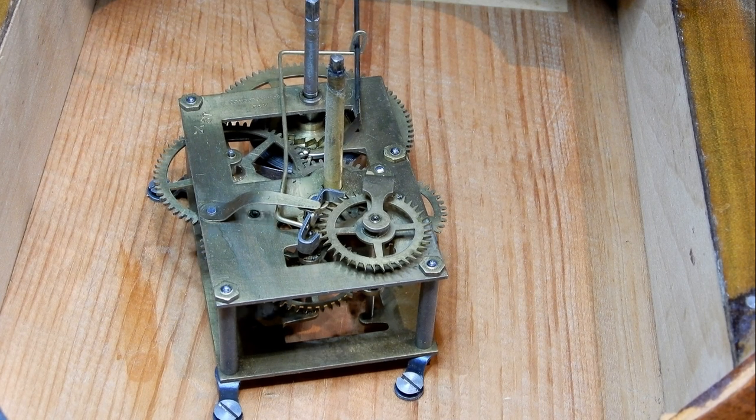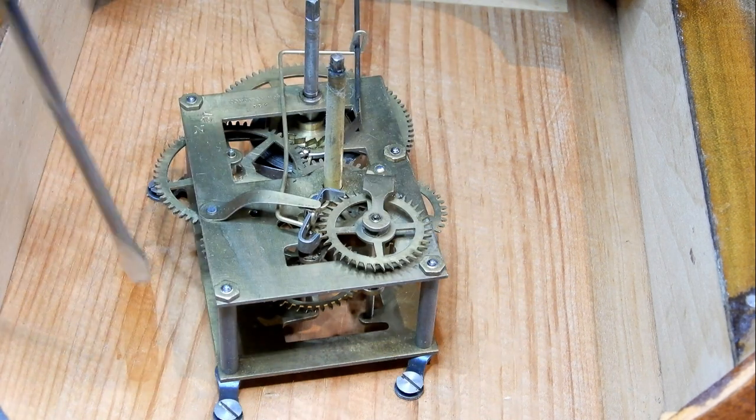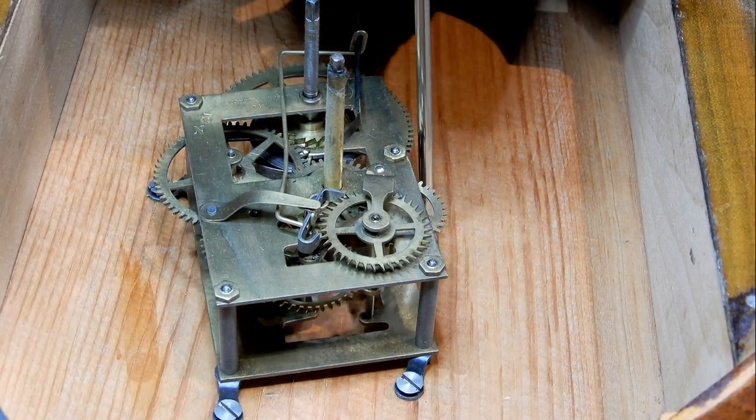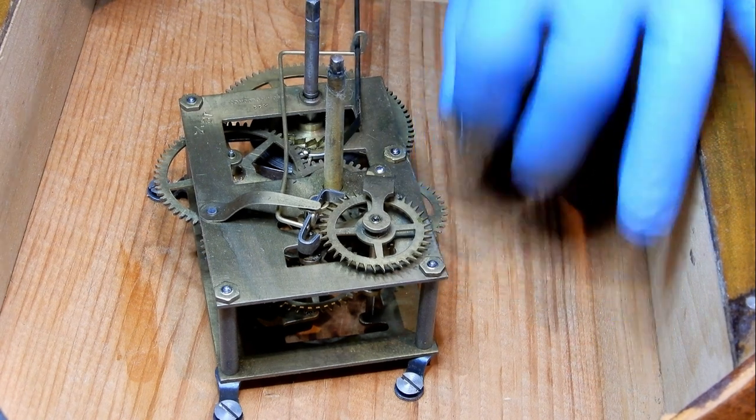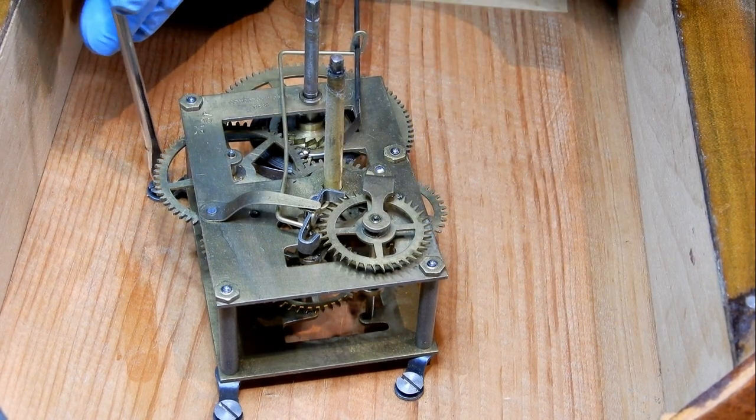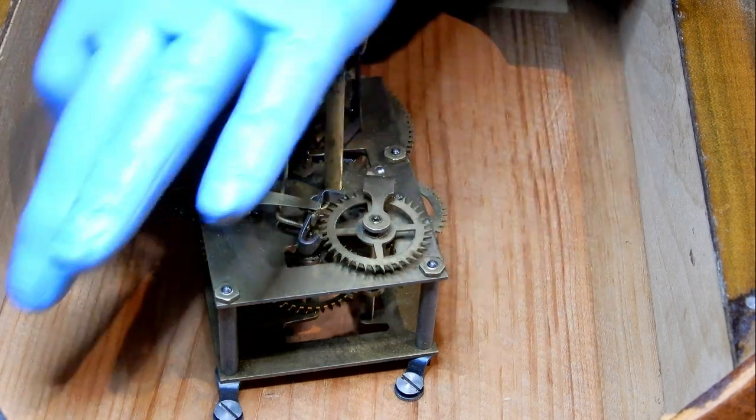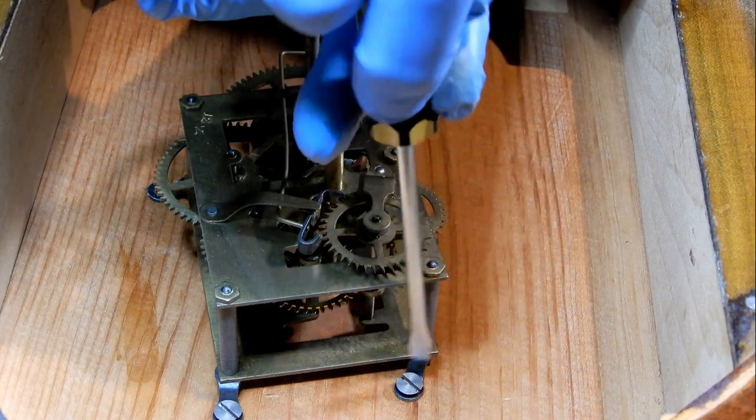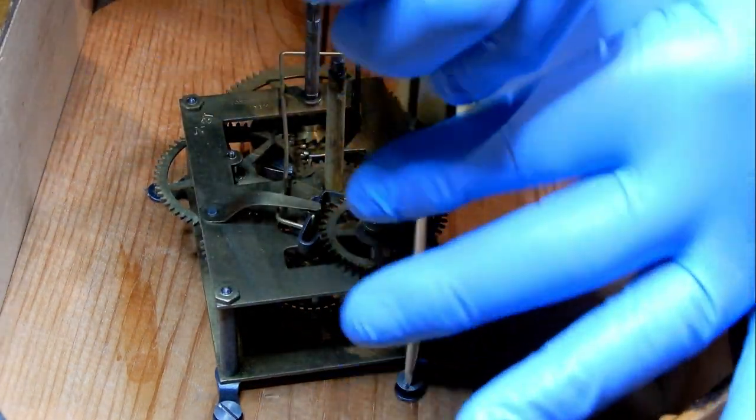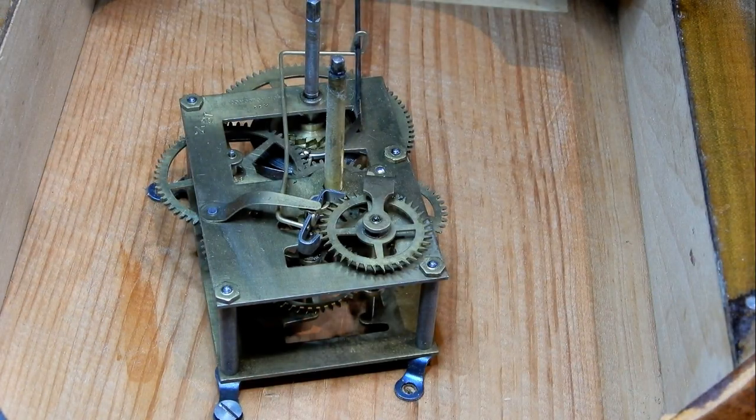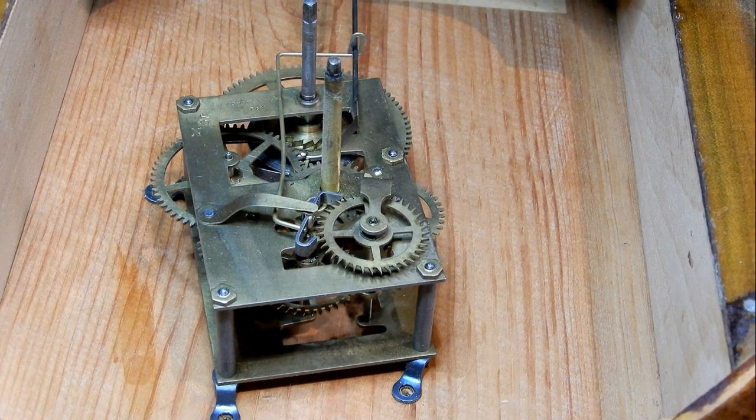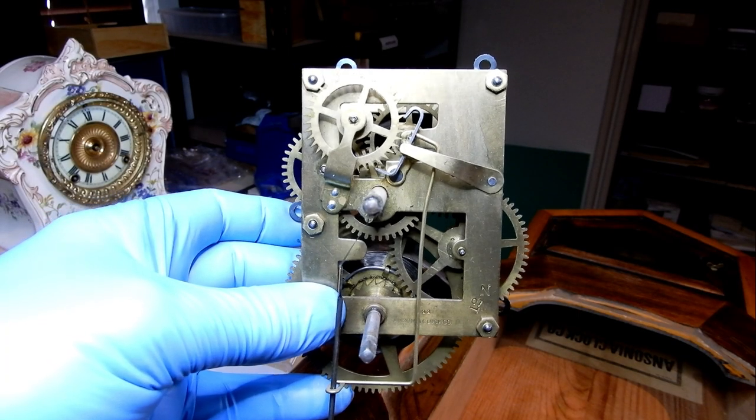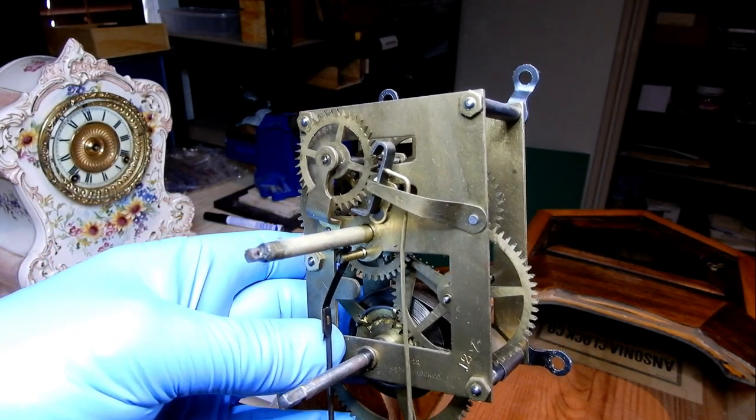Now we will remove the movement. There's four screws. One there, one there, one there, and the fourth one over here. Put them aside. That's the movement there. We'll now take that to pieces.